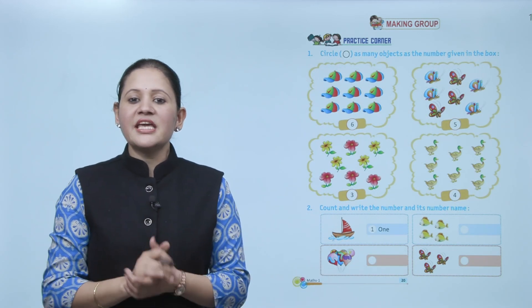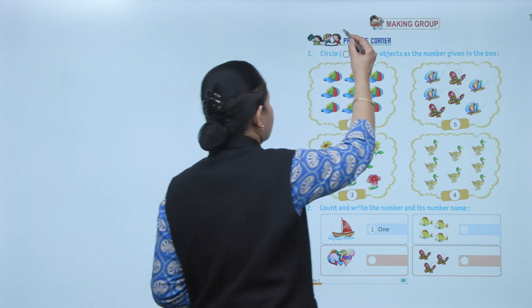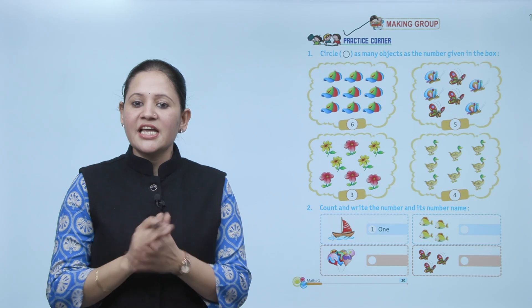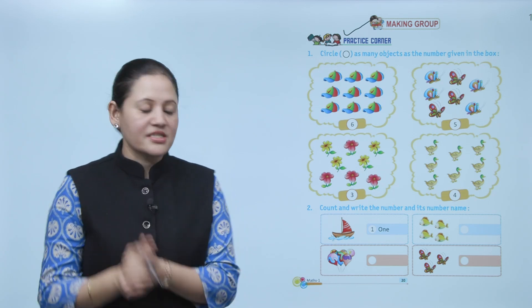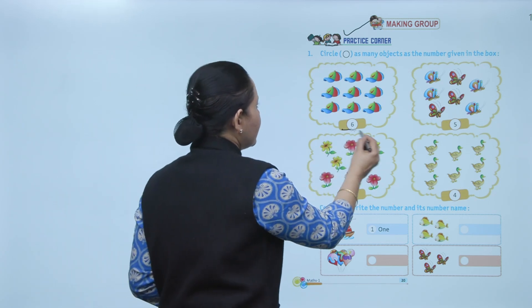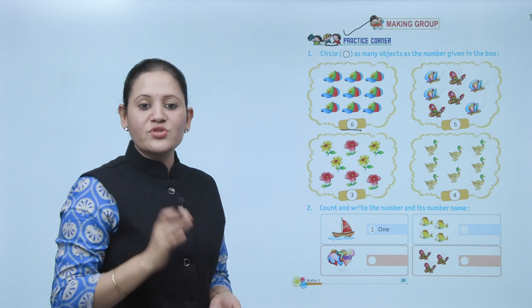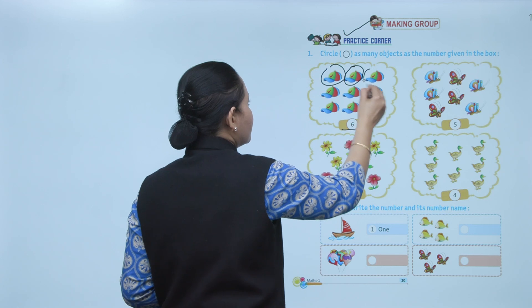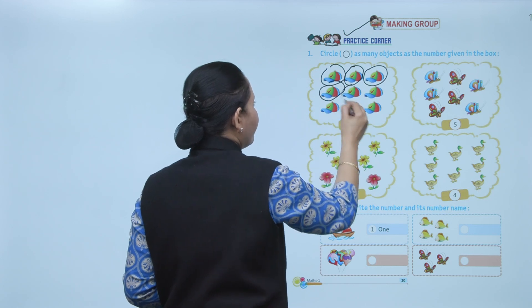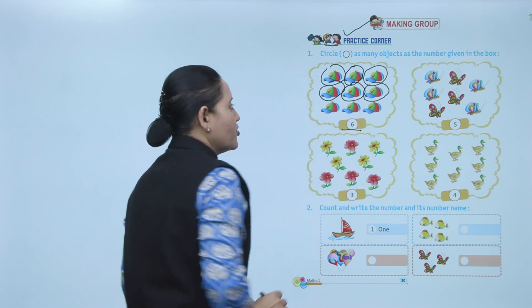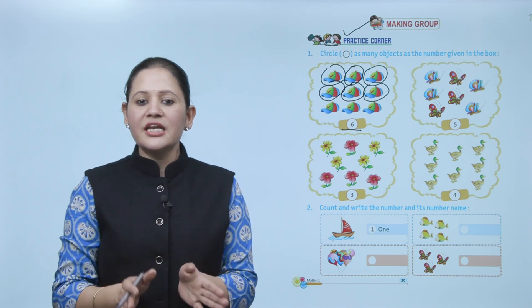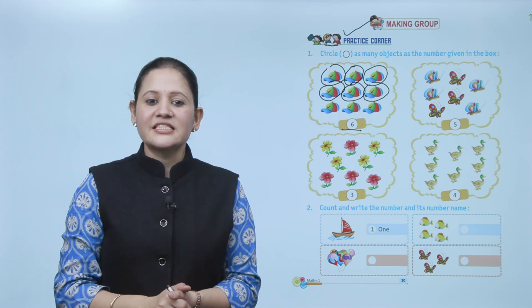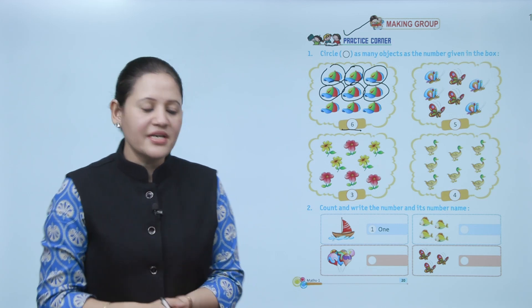Next: making groups. Practice corner — circle as many objects as the number given in the boxes. First is number six, so we have to circle six caps: one, two, three, four, five, six — total six caps. According to the given number you have to circle the objects. Next, count and write the numbers and their number name.